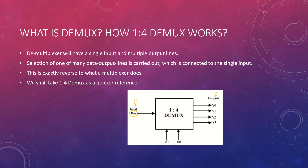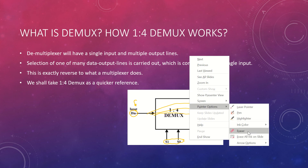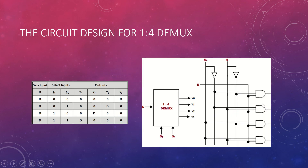The output lines can be Y0, Y1, Y2, and Y3. There are also select lines — here we have two select lines, S1 and S0. The task is simple: select one of the many output lines to be connected to the input. The selection lines play a major role in determining which output line gets connected to the input.